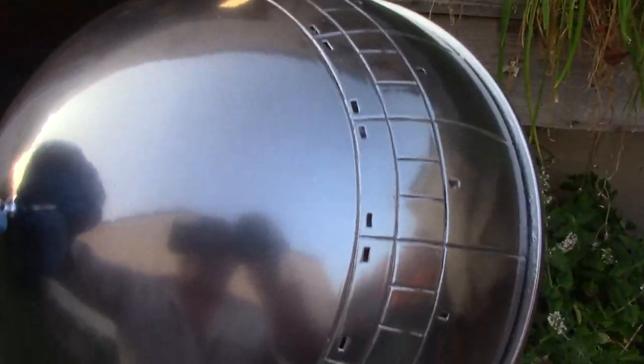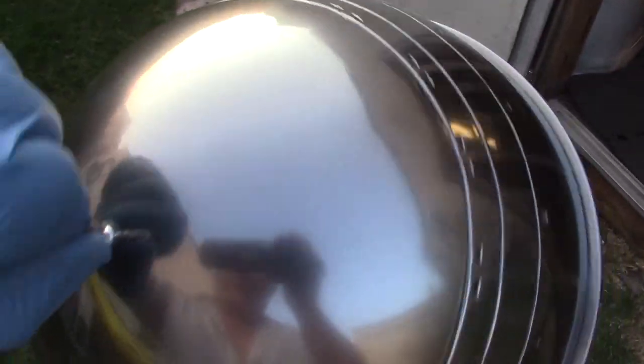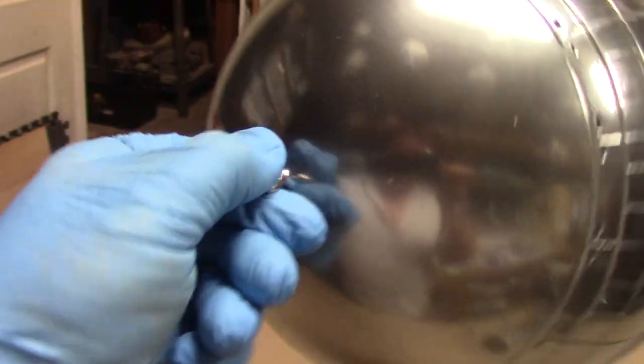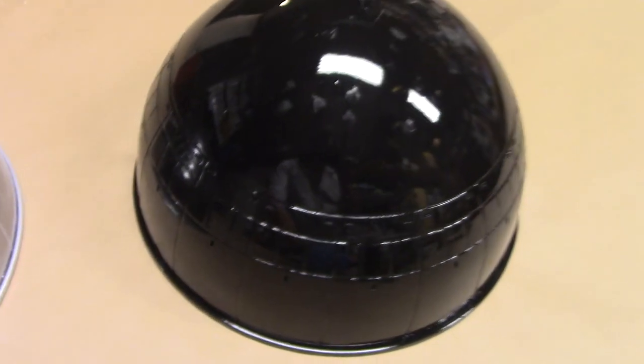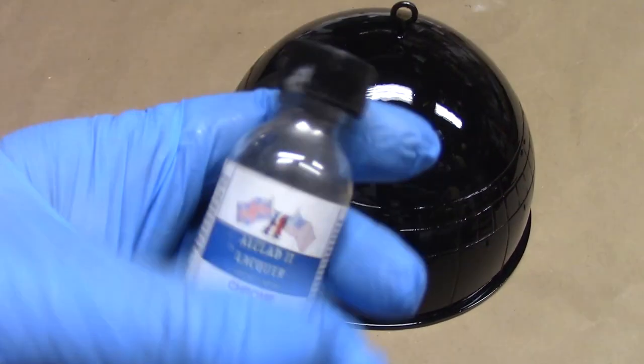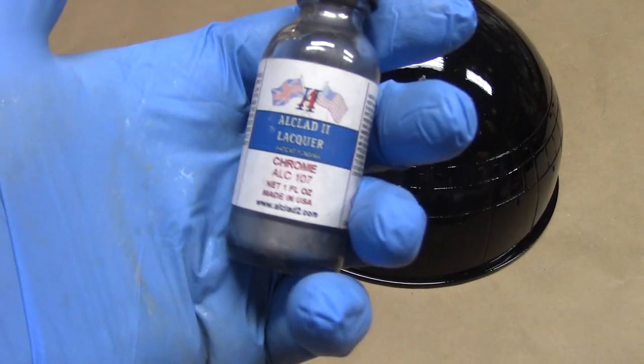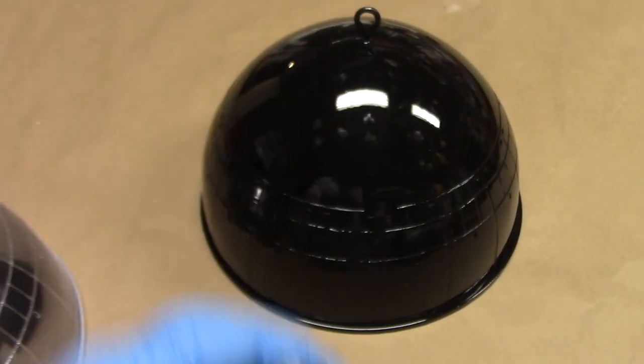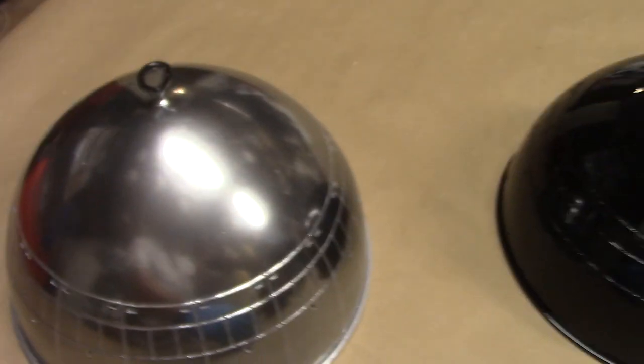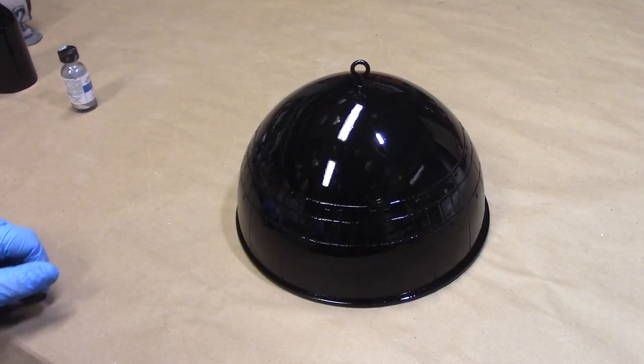Guys, that is astounding. If that doesn't look like chromed metal, I seriously do not know what does. That is going to be really hard to beat, but we're going to give it a shot. We're starting with the same identical dome, same glossiness black. We're going to compare this time Alclad Chrome - this is Alclad 2 lacquer chrome. I've used it before, but I've never done a side-by-side with a competing product. Let's see how this looks.